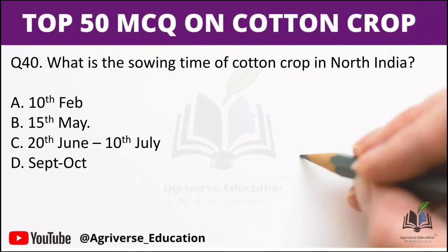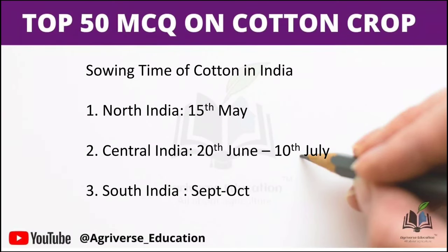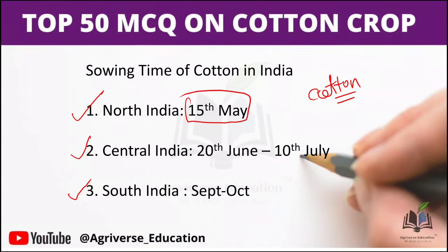Next question: What is the sowing time of cotton crop in North India? The right answer is option B, 15th of May — or the first fortnight of May. Cotton growing areas in India are divided into three zones: North India sows in the first fortnight of May; Central India sows from 20 June to 10 July; and South India sows from September to October.